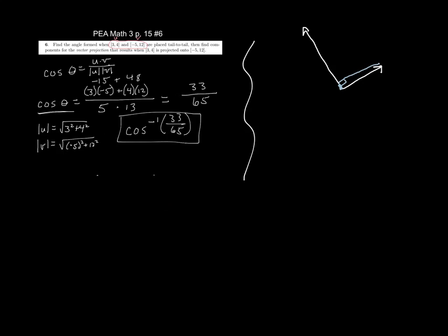Now, vector projections. If I'm projecting U onto V, the formula I'm going to use is U dot V over the magnitude of V squared times vector V.